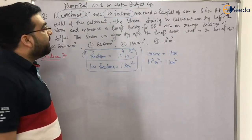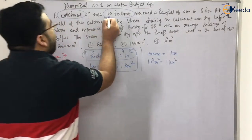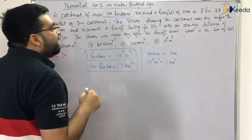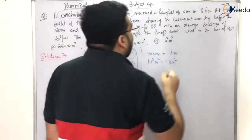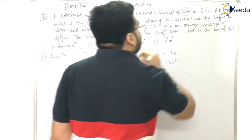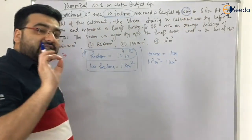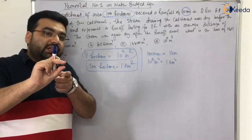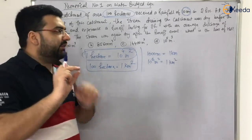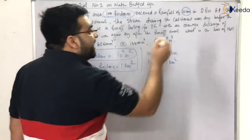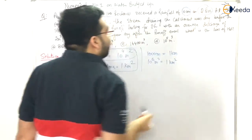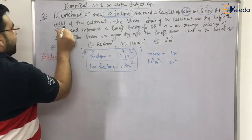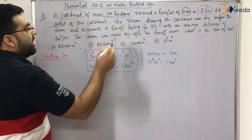A catchment of 100 hectares received a rainfall of 10 centimeters — that is, the depth of rainfall is given to you — in two hours. So the time frame is also given.